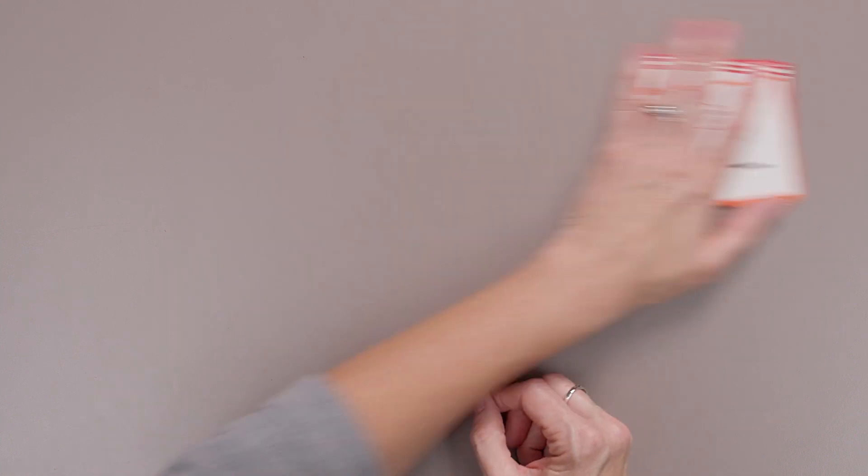Nice work, mathematicians. All right, that was our multiplying and dividing with one and multiplying with zero. Keep on practicing.